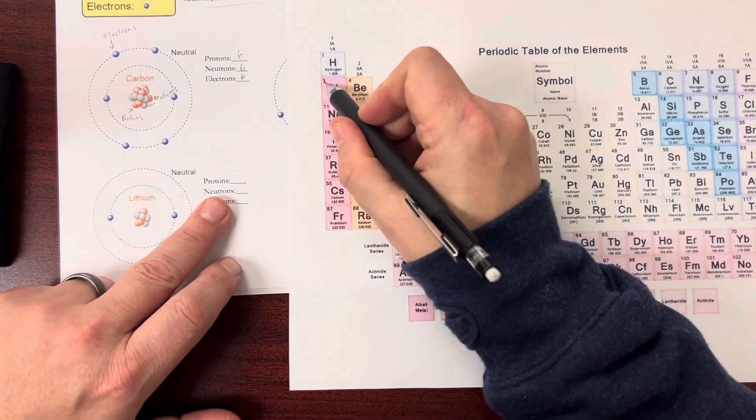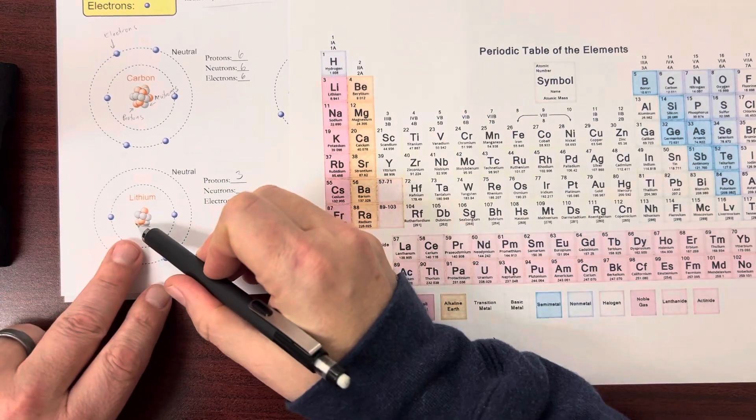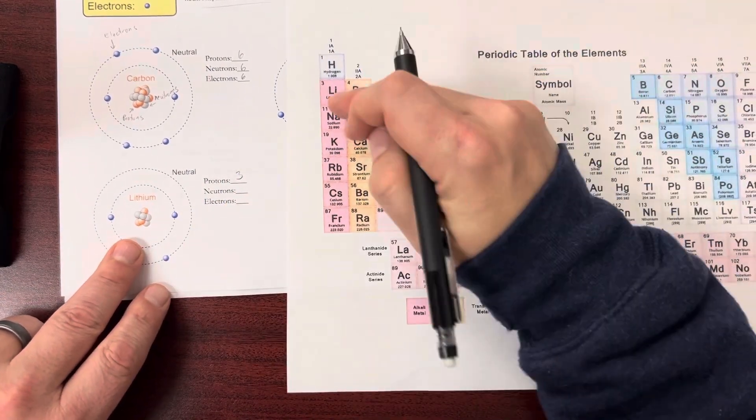Protons. Lithium has an atomic number of 3. That means there's 3 protons. And if I count them here, 1, 2, 3, sure enough, there's 3.